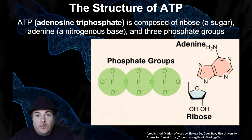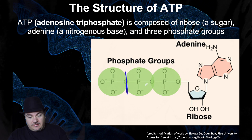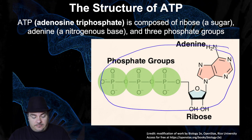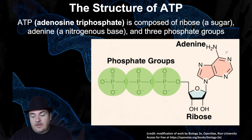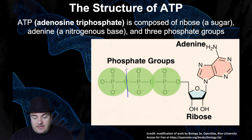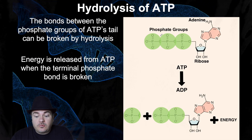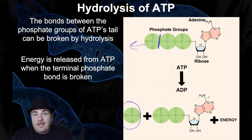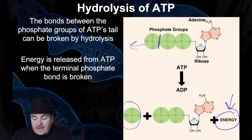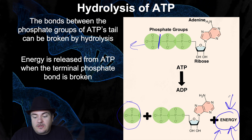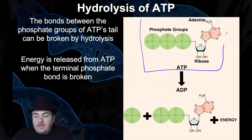This molecule is storing energy — there's energy stored in the bonds between the phosphate groups, so it's like a charged-up battery. When the cell needs energy, it's going to take and break the bond between these phosphate groups using hydrolysis. That releases one of the phosphates and releases energy, which the cell wants to use. So you have ATP, adenosine triphosphate; you do hydrolysis to break one phosphate off, and that turns it into ADP.